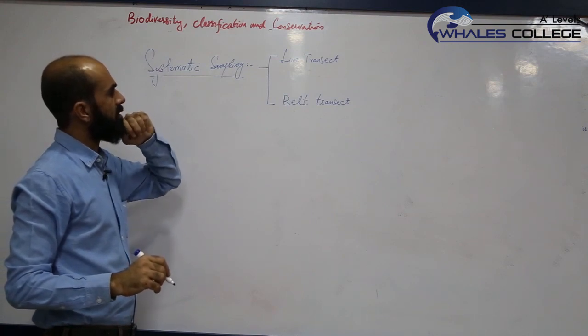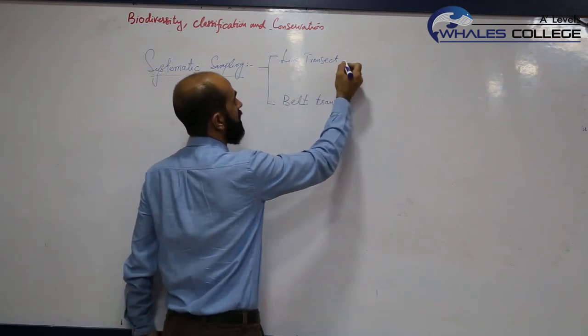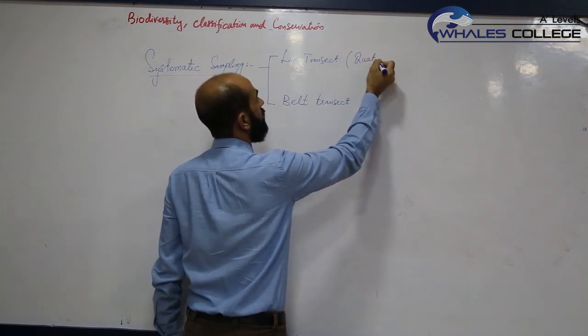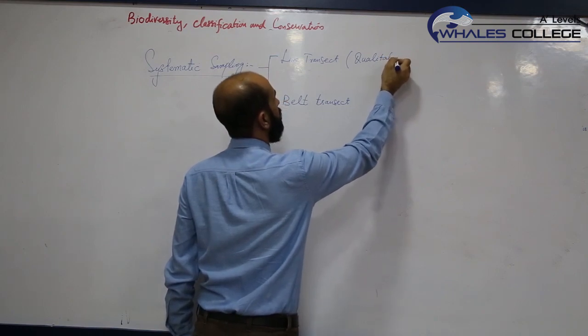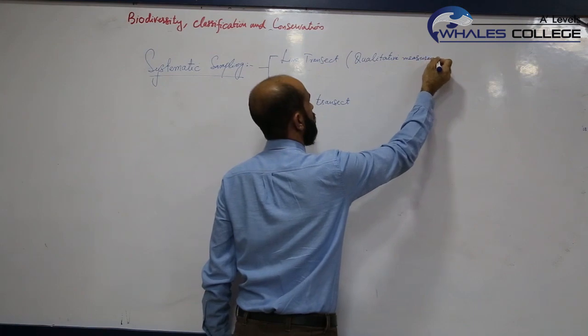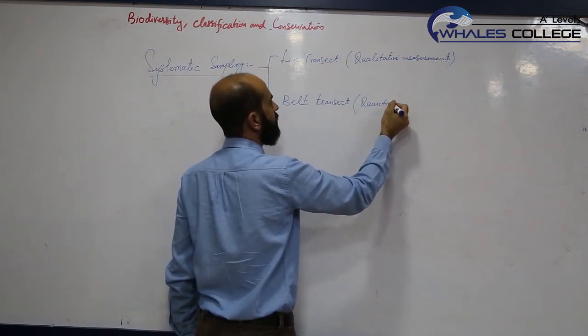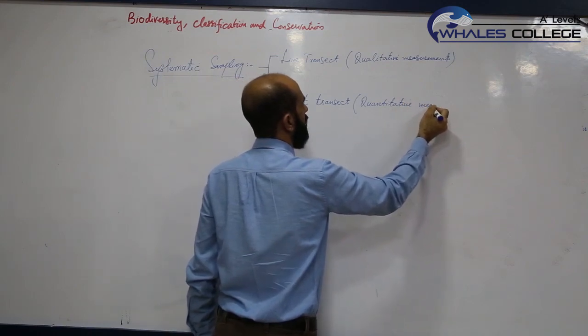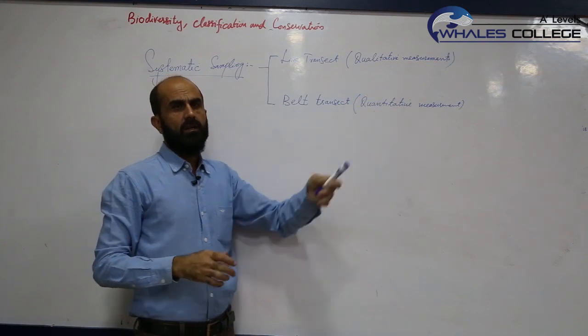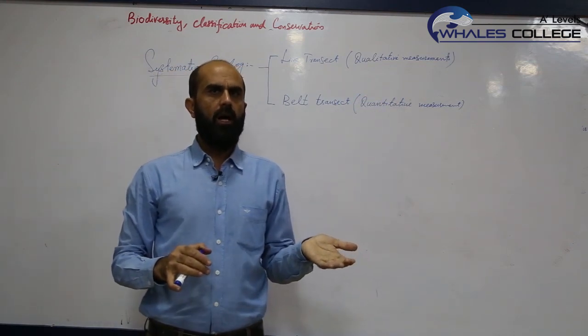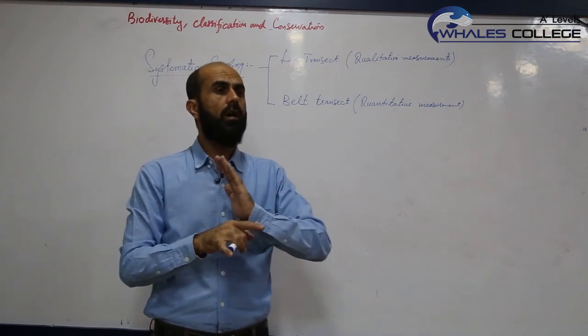What is the difference between these two techniques? Line transect and belt transect, both are techniques of systematic sampling. Line transect is used to measure qualitative measurements. What does it mean? Qualitative means which type of vegetation, how many types of species are there. We do not count individuals of each species, we just look at how many species we have.